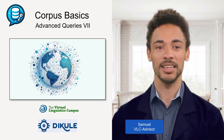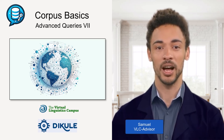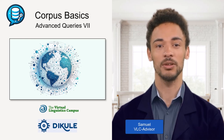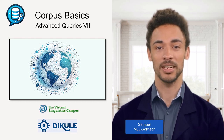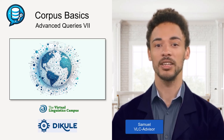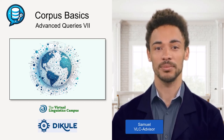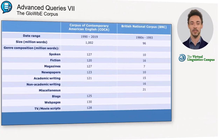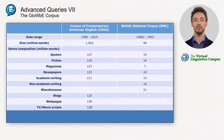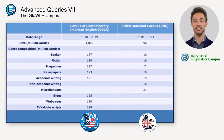Welcome back. In this video I want to show another useful corpus that can be reached via english-corpora.org. For comparisons between British and American English, you can use the COCA and the BNC.